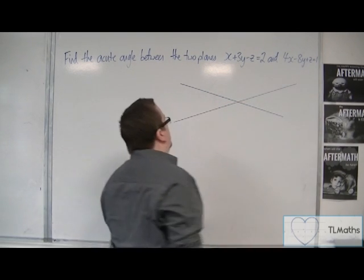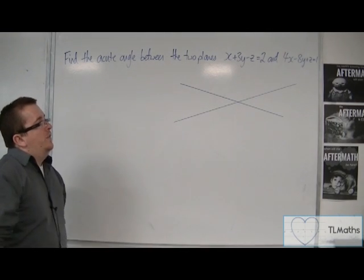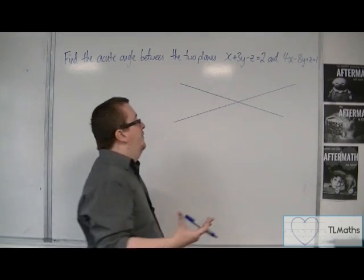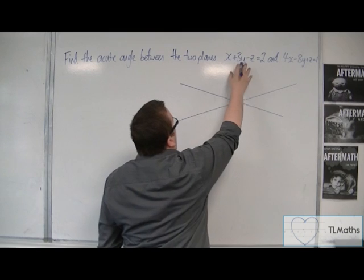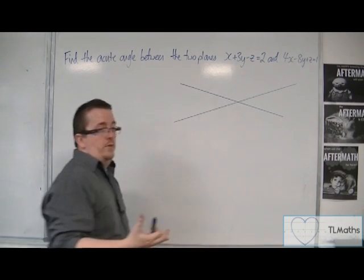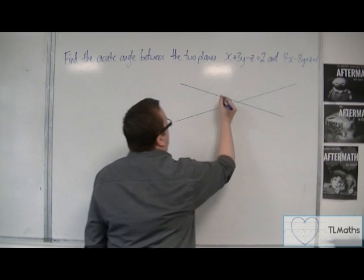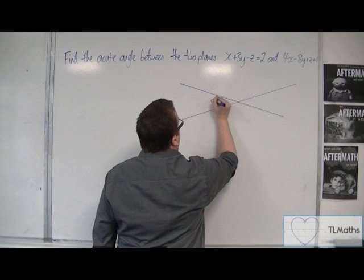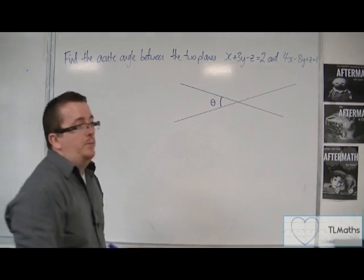And the information that I have is that I can tell the normal vector for both of them. I want to find this angle here, the angle that the two planes make when they intersect.